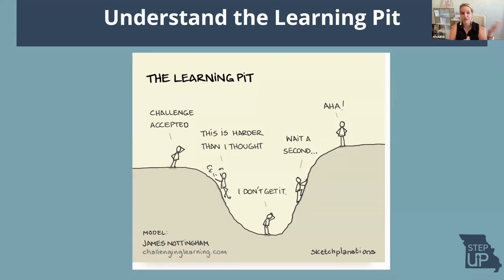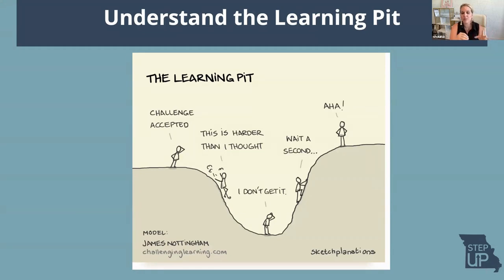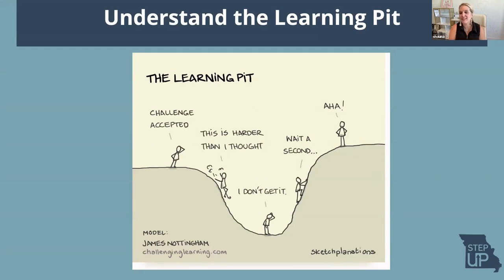We have to face that misconception with kids right at the beginning: smart people have a learning pit. There's a point where you just really don't understand it, and you've got to stick with it, go through that cognitive dissonance, and then start to crawl out of it. Having student success criteria helps students understand that first I have to understand text features, and once I understand those, I can begin to compare them to find relevant information. We're showing them what learning progressions look like — really trying to teach resiliency and grit. We also have to teach mindset along with clarity to help students get there.